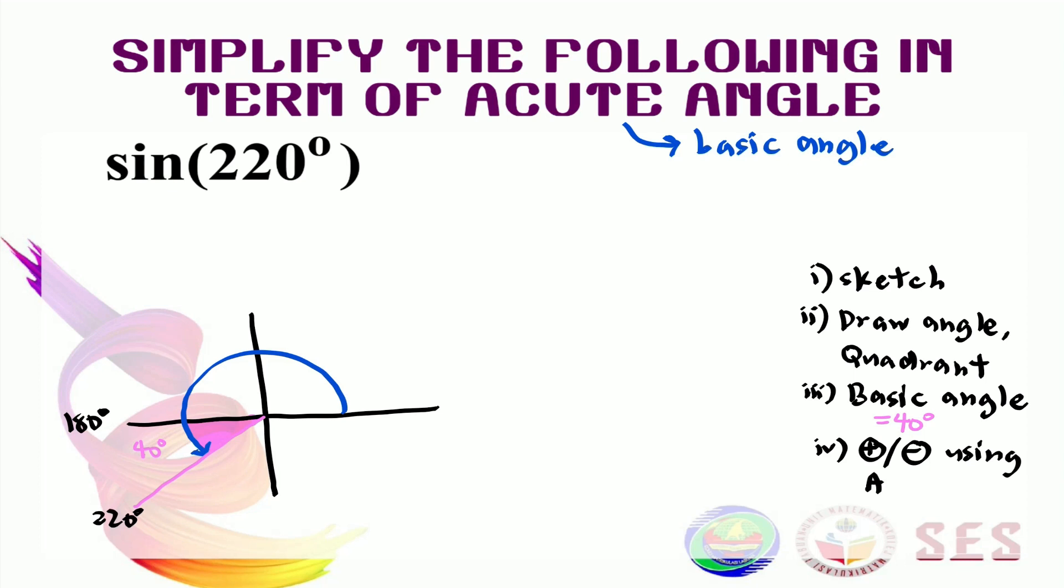The fourth and last thing to do is to find its positive or negative by using ASTC. So we know that this is A, this is S, this is T and this is C. Since this here is in the third quadrant, only tan is positive. Our function is sine. That means the sine here is negative. So to simplify this term here, we need to write it in this form. We need to have its sign first and then its function and then its basic angle. So the sign is negative, the function is sine and its basic angle is 40. So this is how we simplify the term. We need to have its sign from ASTC and then just copy its function from here. And then we're going to simplify its angle by using basic angle here.